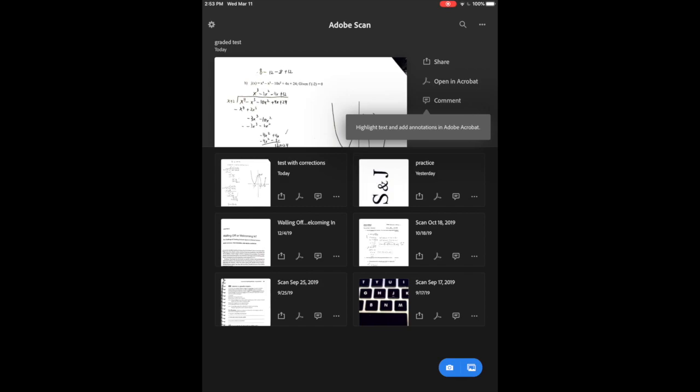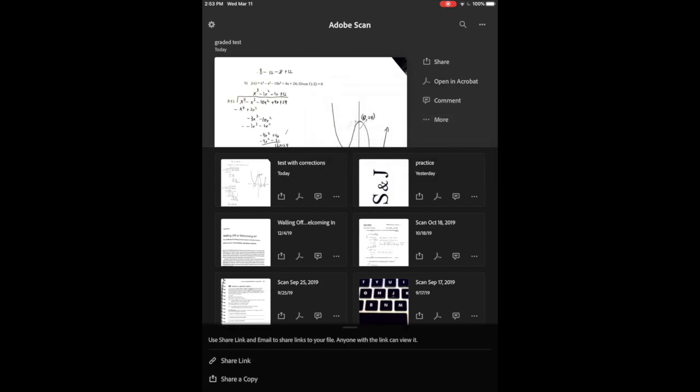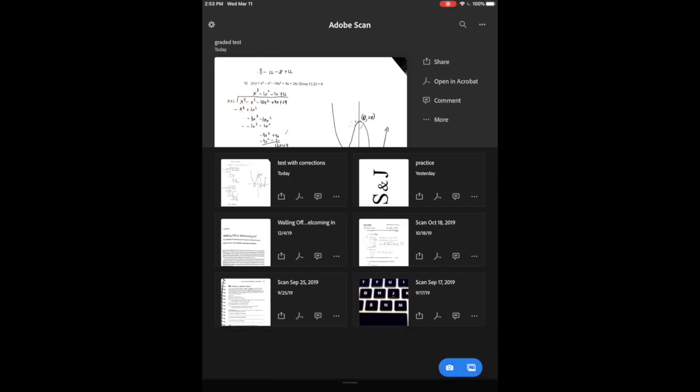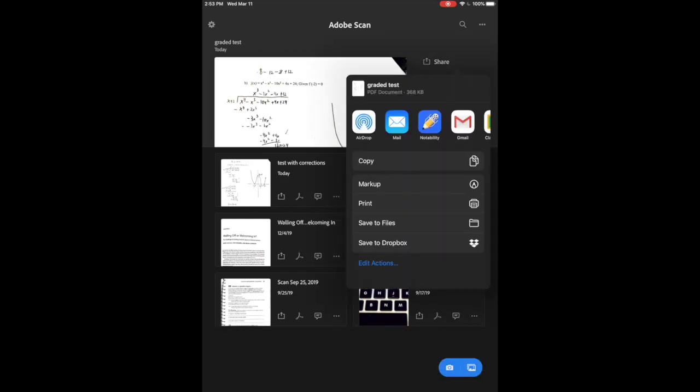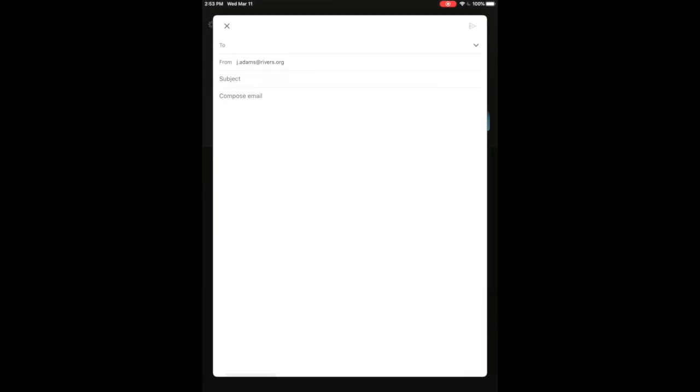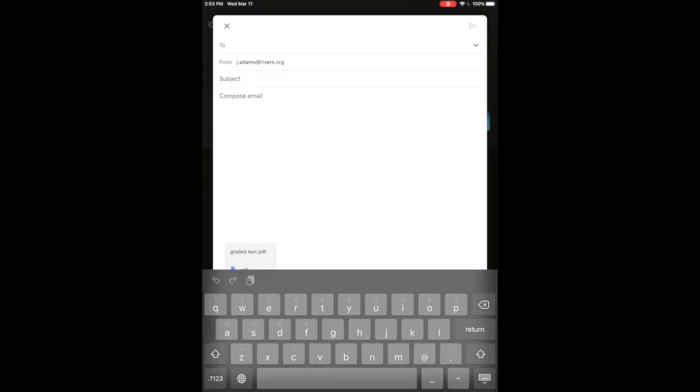And then if I want to go ahead and share those with students, I can hit that share button. And at the bottom, you see, it says share a link, share a copy. I'll share a copy, which is the actual PDF. And then I can just go to Gmail or however I want to share it and send that to my students.